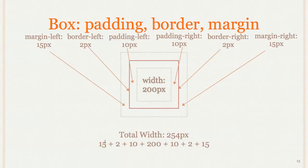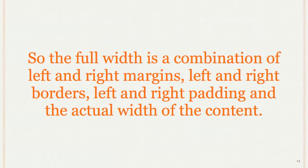So there we go. So that's how it is. You have to add the margin, the border, the padding, the width on both sides to get the total width of an element. So that's the full width, is that combination of things.